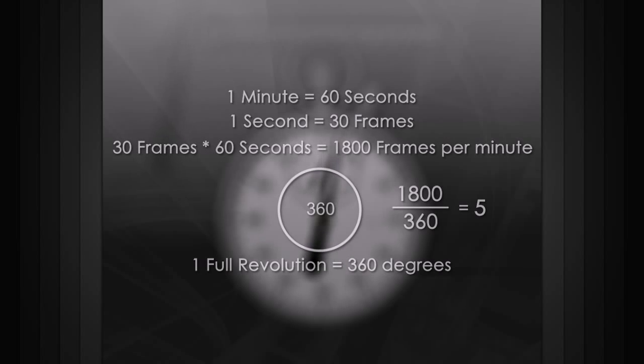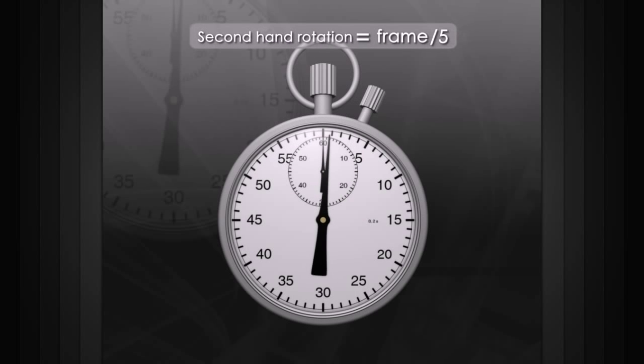So, let's change our expression to frame divided by 5, and now let's play it back. Our stopwatch is now accurately animated over time. All this without setting a single keyframe.